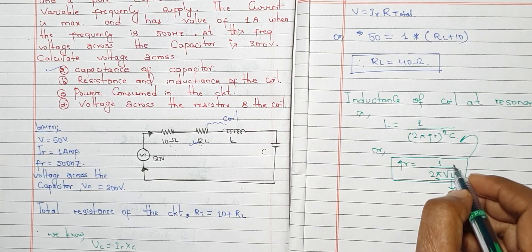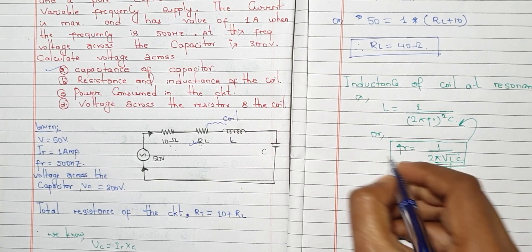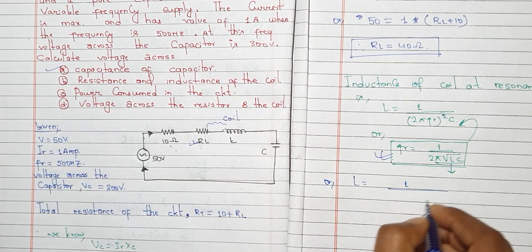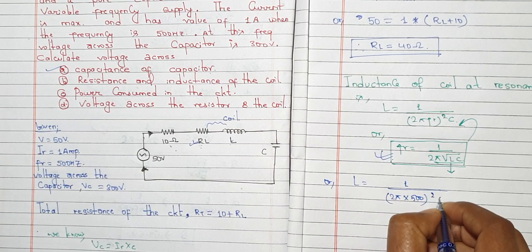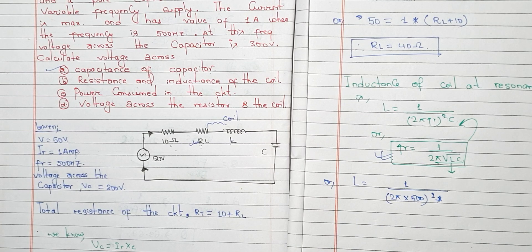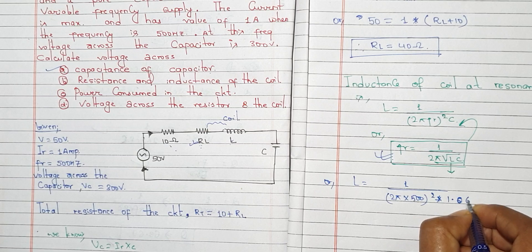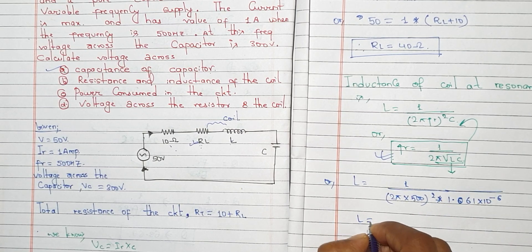The value works out to 1.606 times 10 to the power minus 6, and we calculate 95.5.